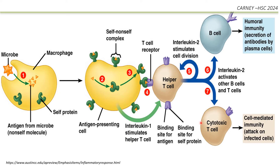The plasma B cells secrete antibodies which are specific to the antigen presented, in order to neutralise and eliminate it — one antibody for one type of antigen, which is why this is a highly specific immune response. On the other side, cytotoxic T cells begin killing the infected cells. This is all happening at the cellular level.